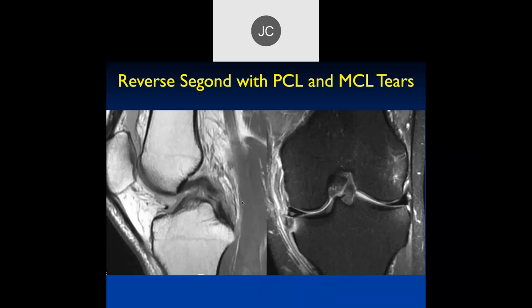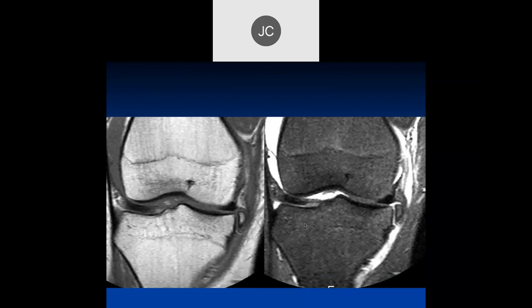I've seen them on plain films in the old days. Usually this has to be a pretty significant impact - probably a motorcycle accident or something like that. So this is an acute reverse Segond fracture. And this one looks like there is a non-union of that reverse Segond - it's corticated, so this is a chronic reverse Segond fracture.